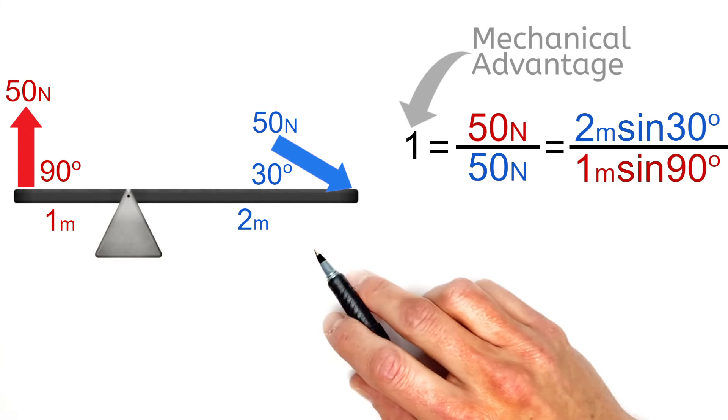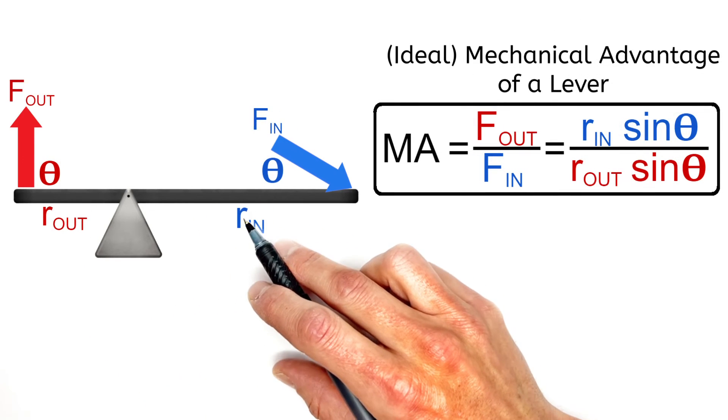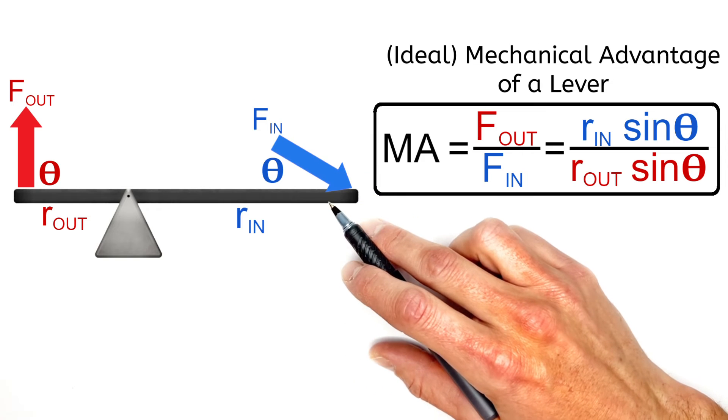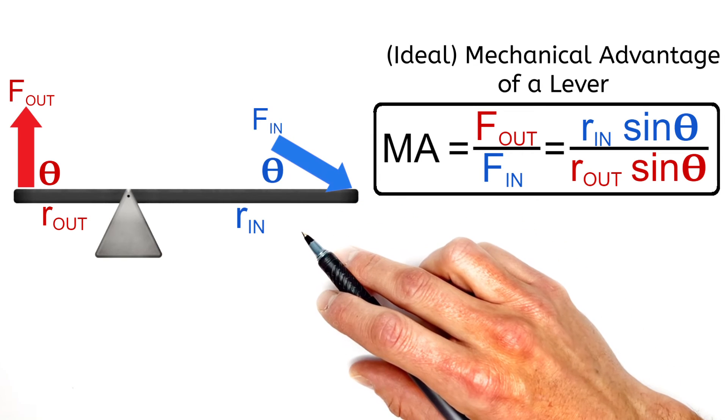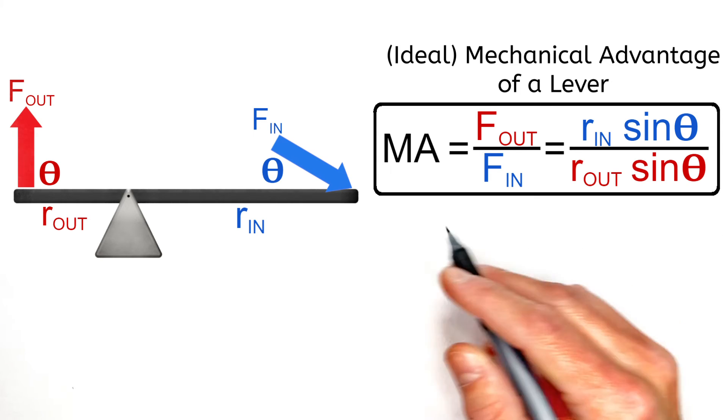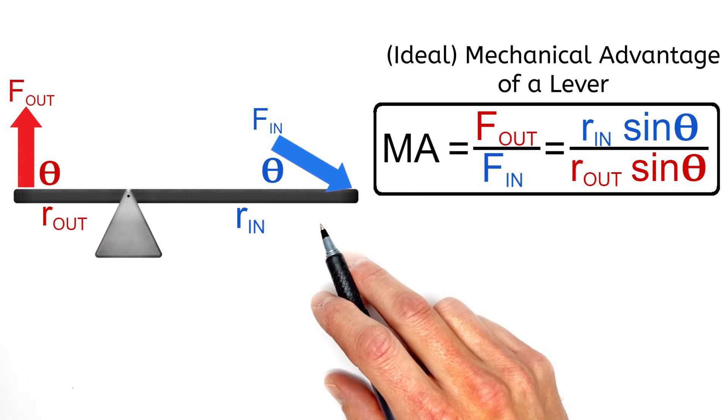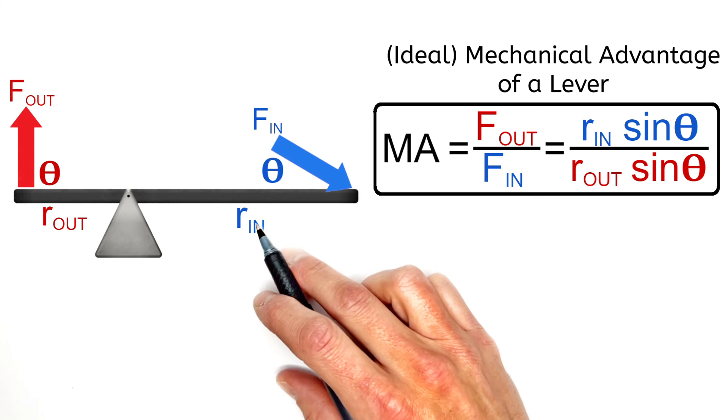Meaning the mechanical advantage of a lever is not just defined by its dimensions or its lengths. We also have to factor in the direction of the forces relative to the lever. And you can see that since the sine of an angle is maximized at 90 degrees, if we push on the input side of this lever at any angle other than 90 degrees, we're going to be losing mechanical advantage.